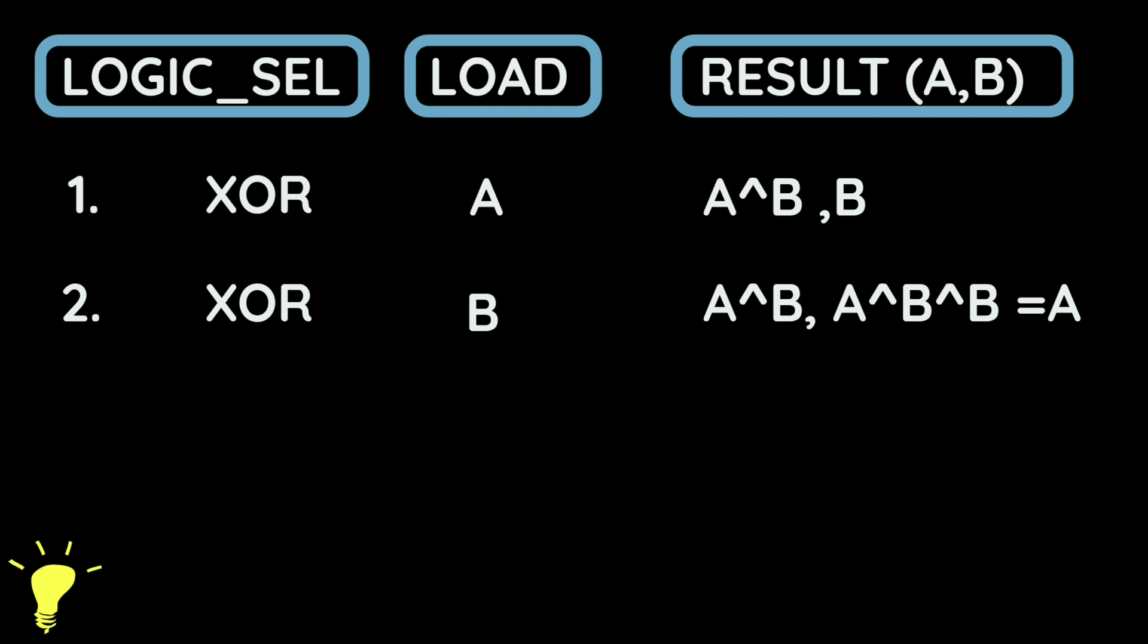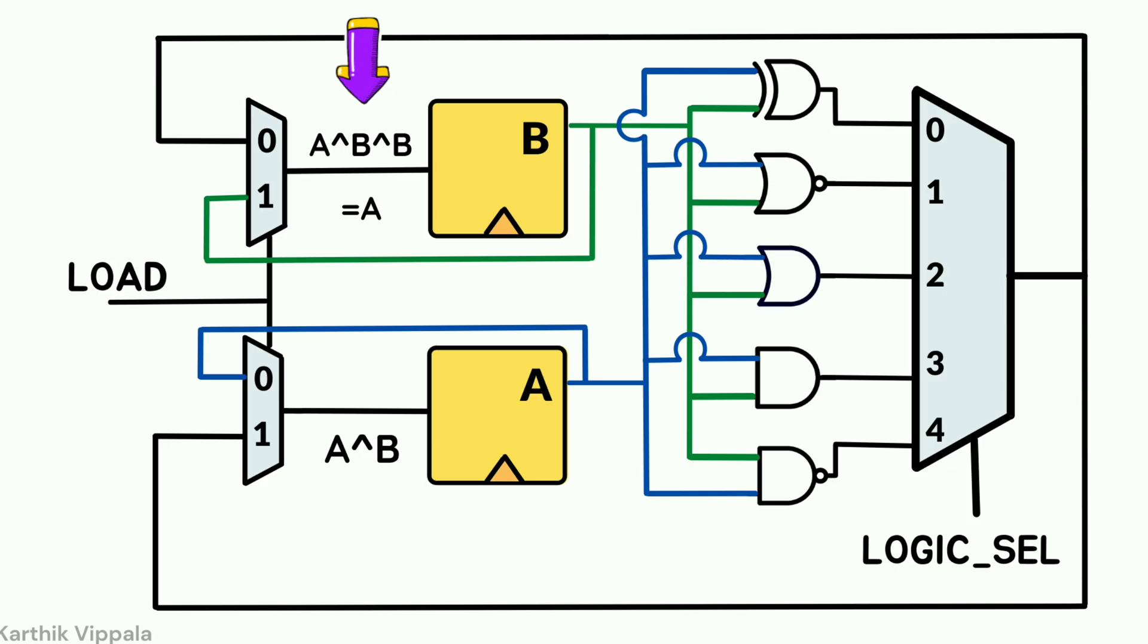In the second clock cycle, I will again perform XOR operation. Now the output is A XOR B XOR B. Now I will load the output of the multiplexer into B, so B is now A XOR B XOR B. From our previous observations, we can say that B XOR B is 0, which in turn is XORed with A, so the output will be A.